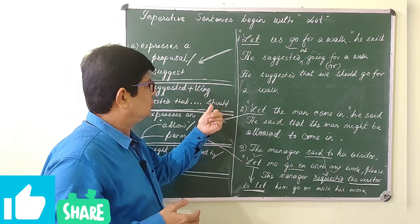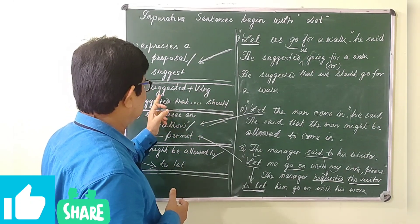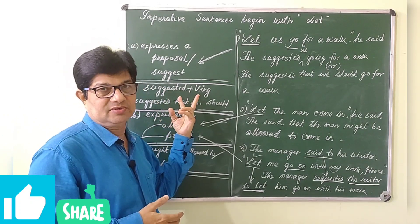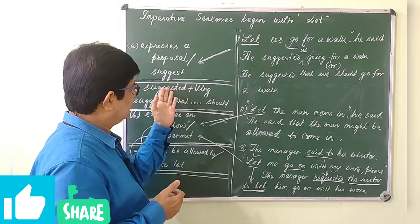It should be V-ing. So, suggested plus V-ing - this is the pattern, the verb pattern which we will find out here.